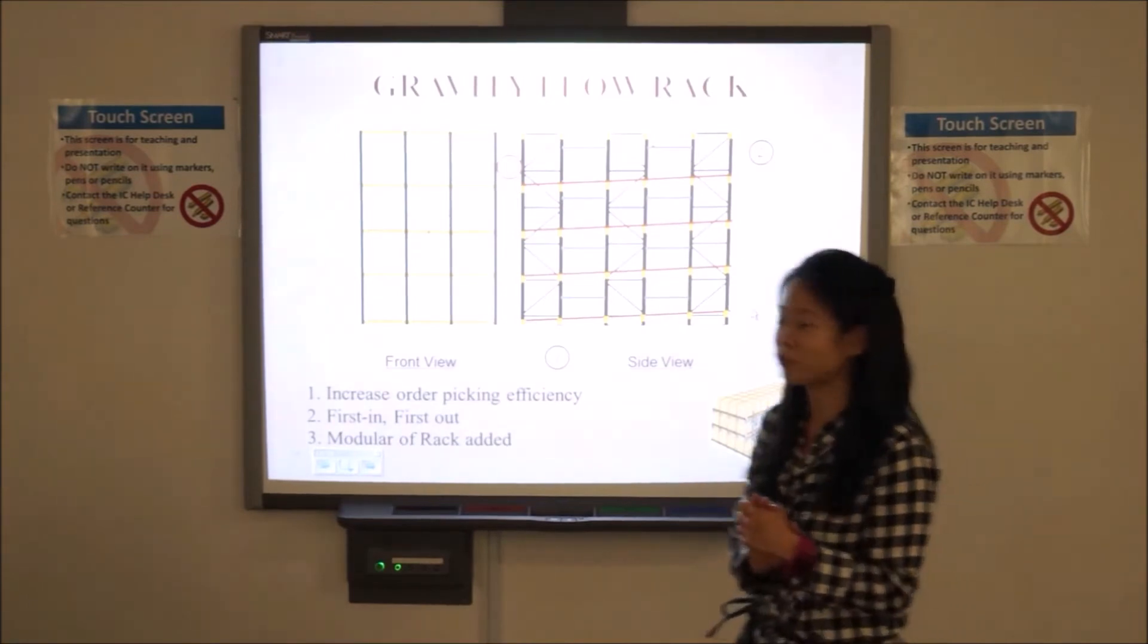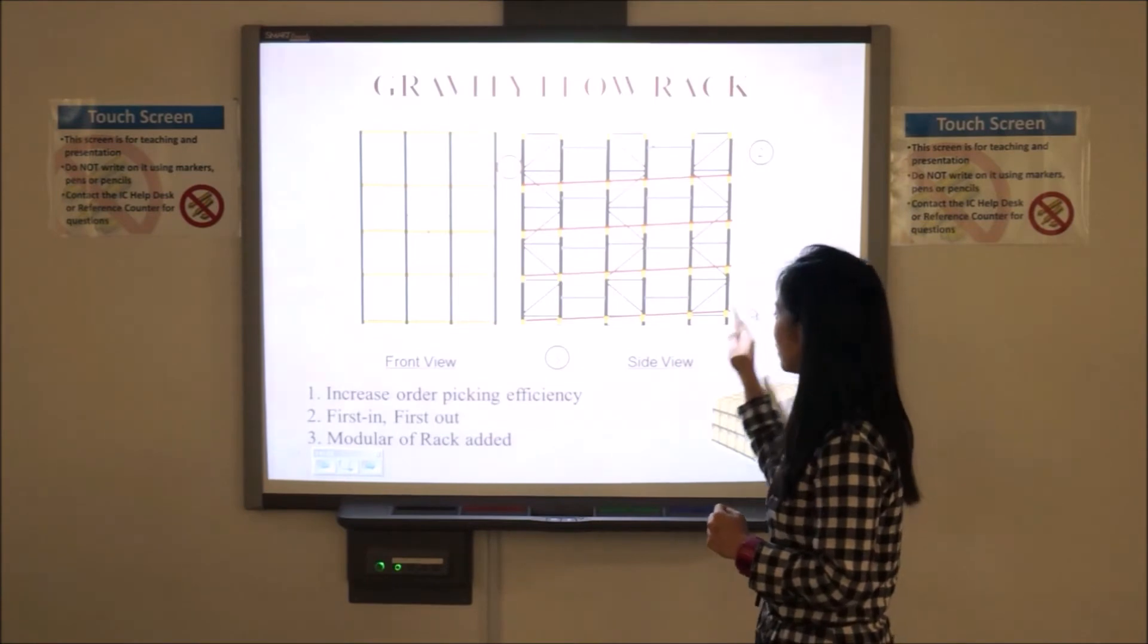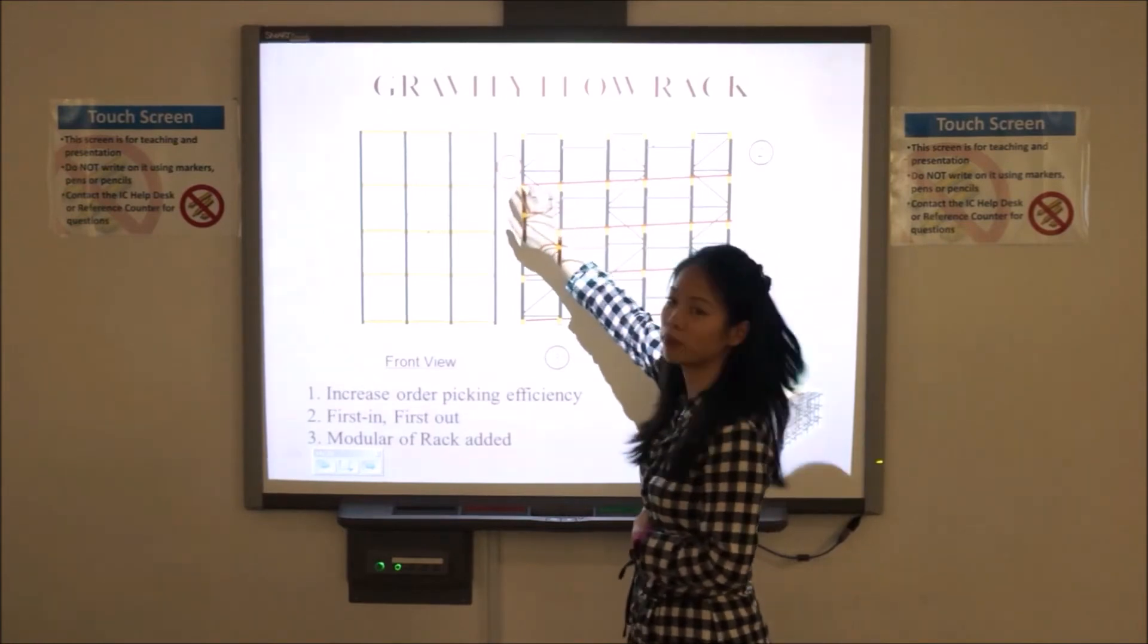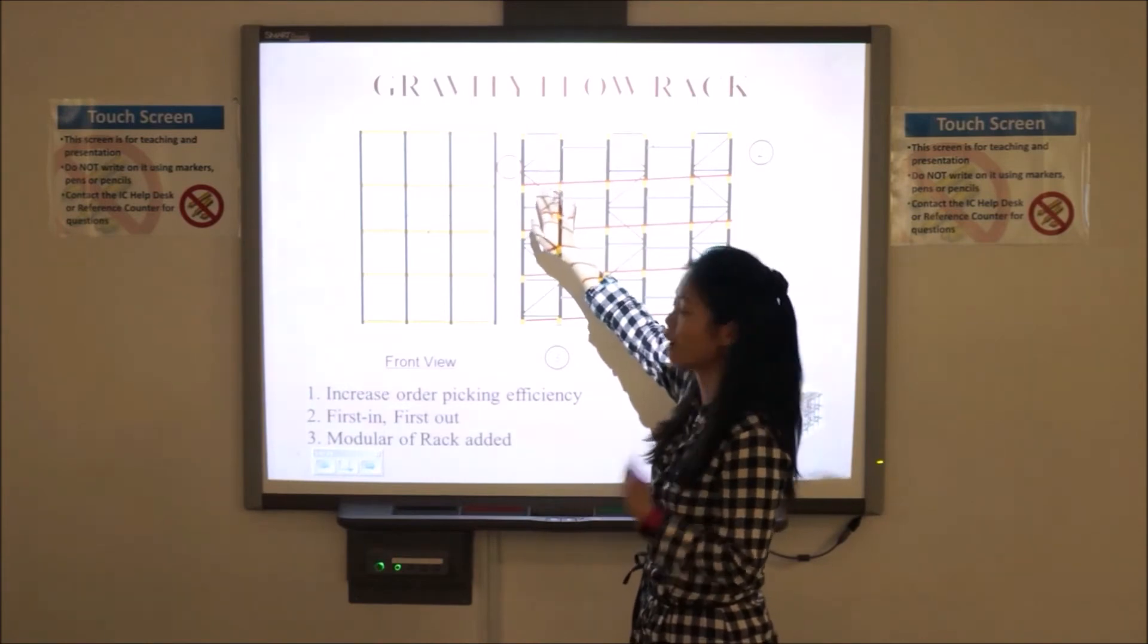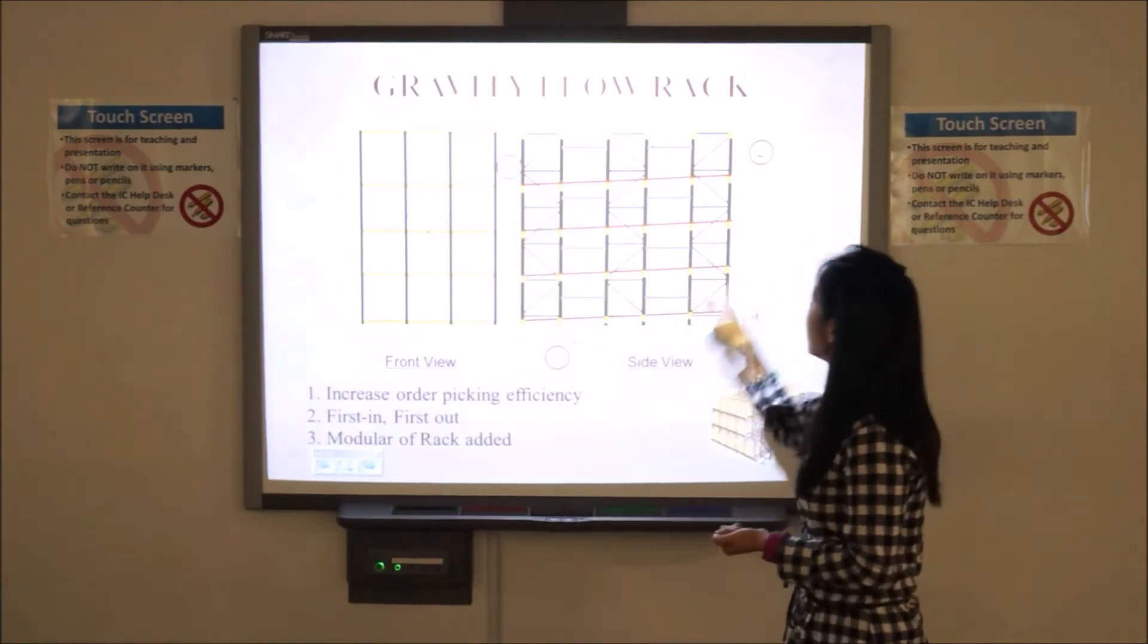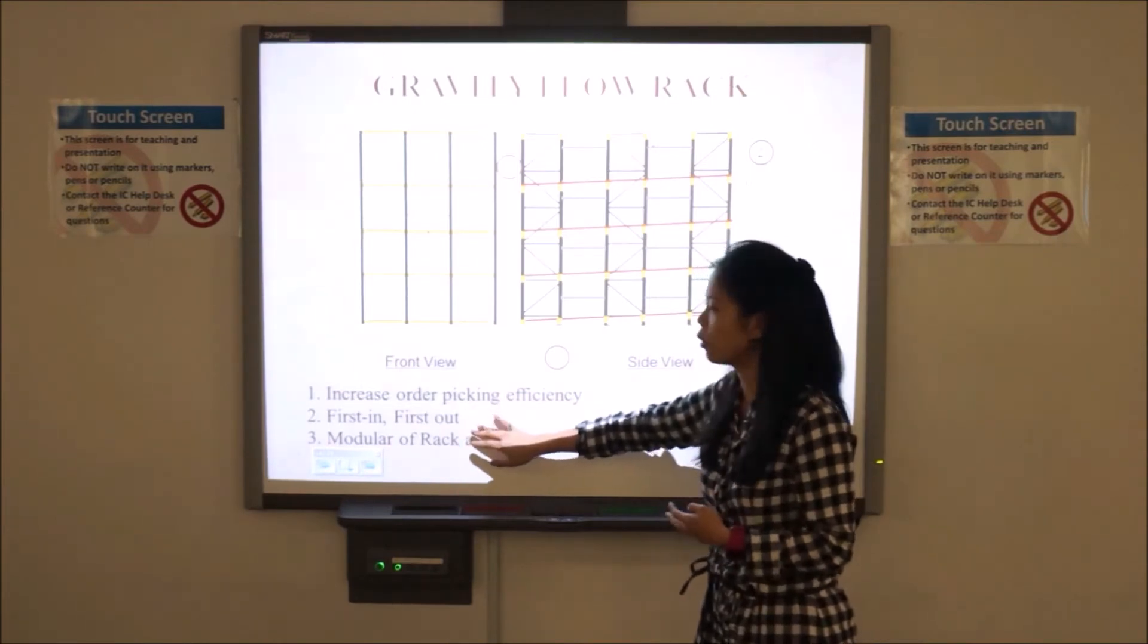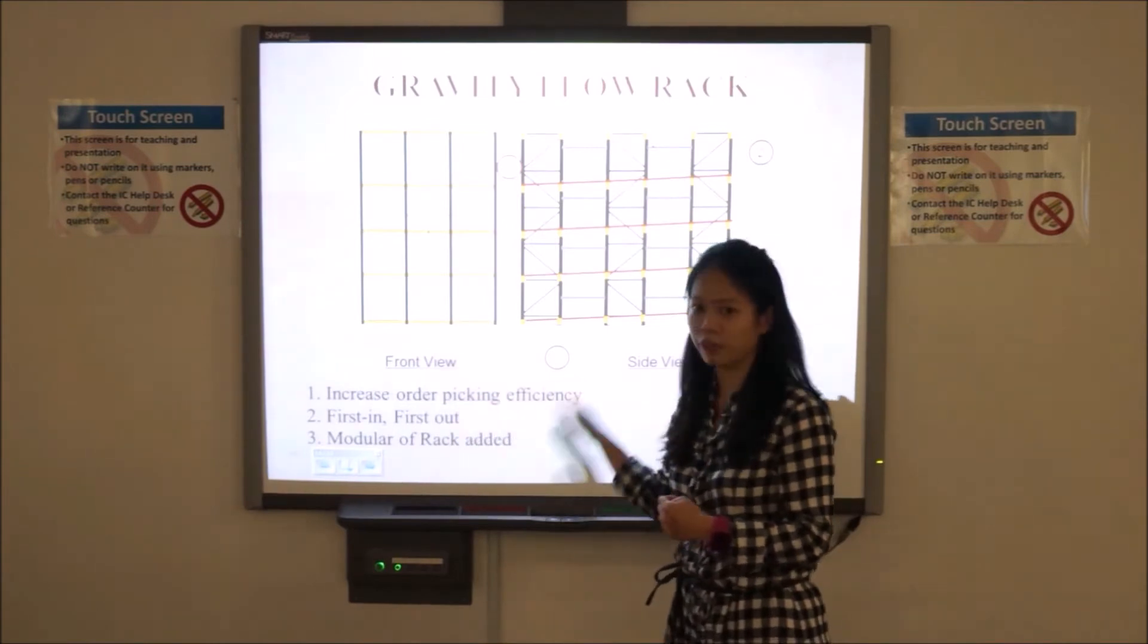The first one is gravity flow rack. This graphic shows how it works. Let's look at the side view. In the inbound process, the operator will pick the SKU from the reachable level. And the inner SKU will flow automatically to the front after every pickup. As for the restock, the operator will fill the rack from the back of the rack. So it makes use of the first-in-first-out application. Besides, it can increase the order picking efficiency.